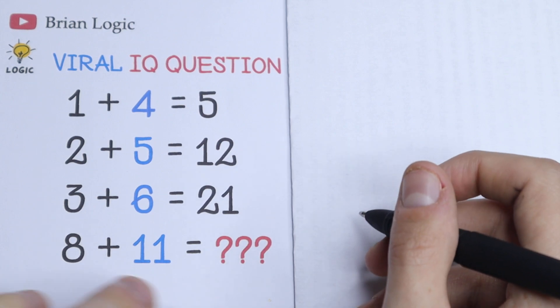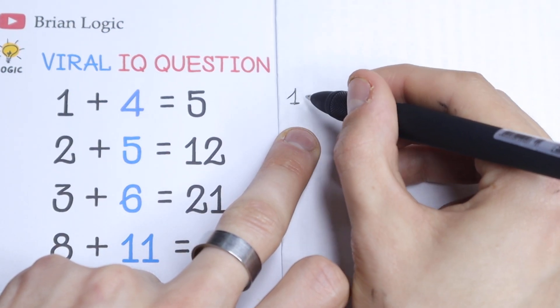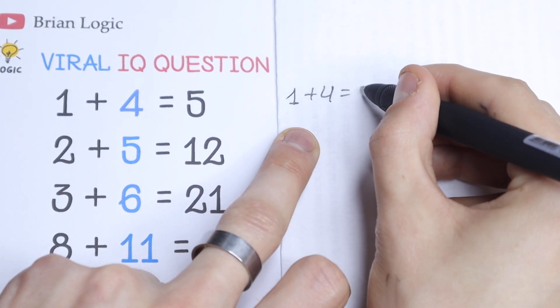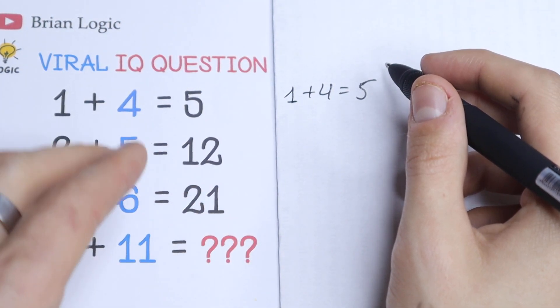So let's start to solve it. Take a look. Right here we have 1 plus 4 equal to 5, which is correct. 1 plus 4 equal to 5, which is good. But right here we have 2 plus 5 equal to 12, which is not correct.